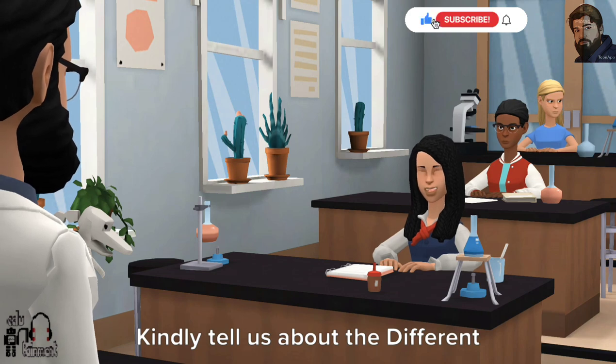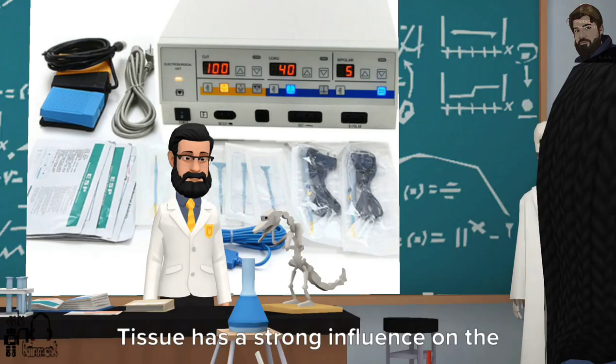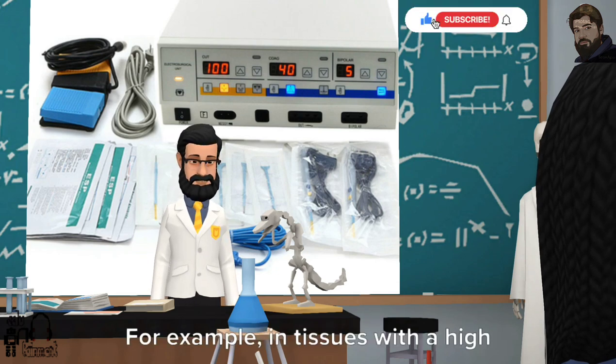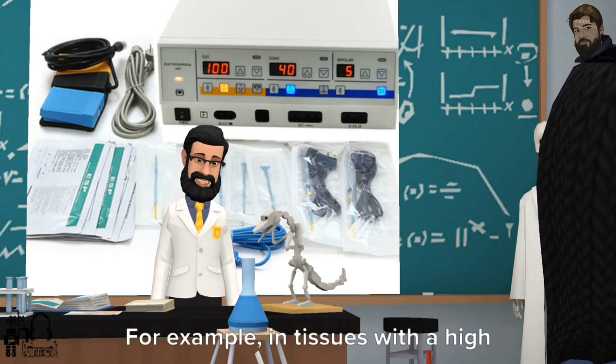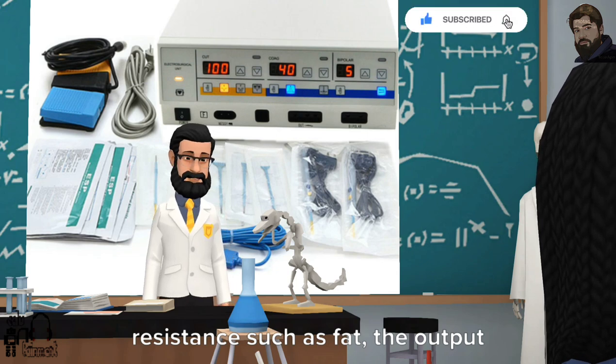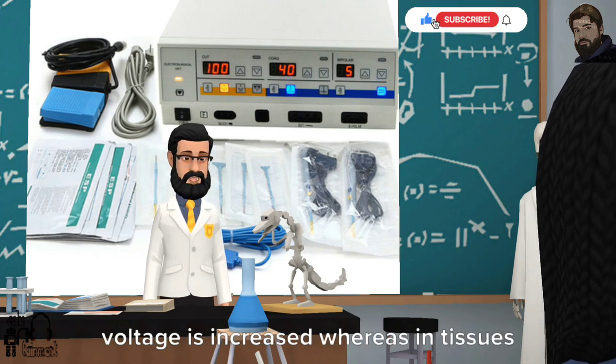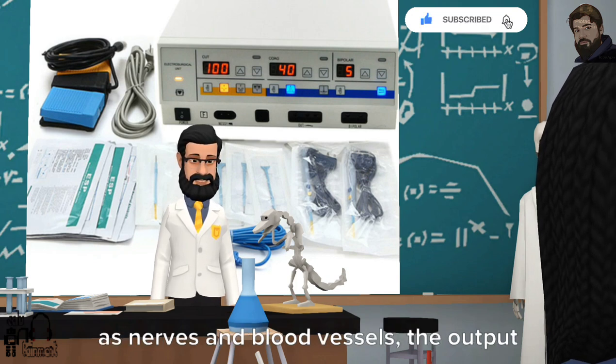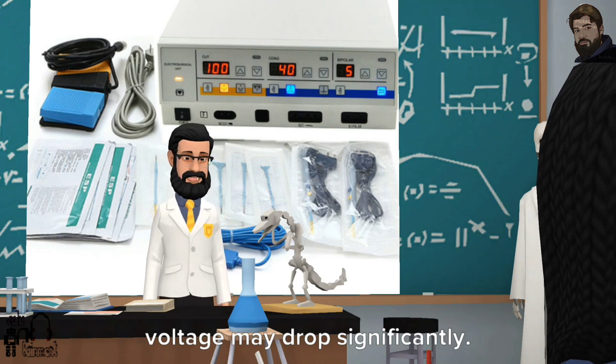Kindly tell us about the different tissue properties. Tissue has a strong influence on the quality of the cut. For example, in tissues with a high resistance such as fat, the output voltage is increased whereas in tissues with a low electric resistance such as nerves and blood vessels, the output voltage may drop significantly.